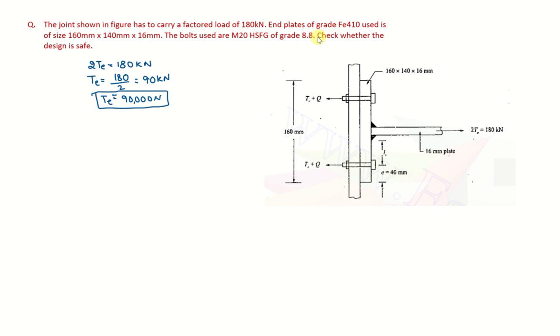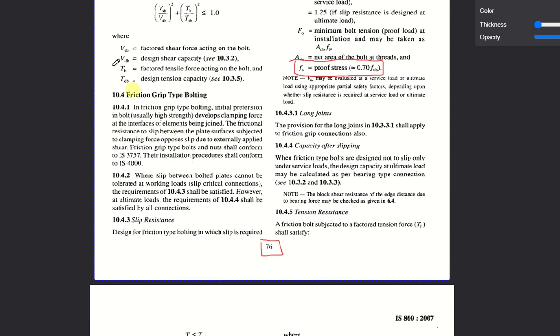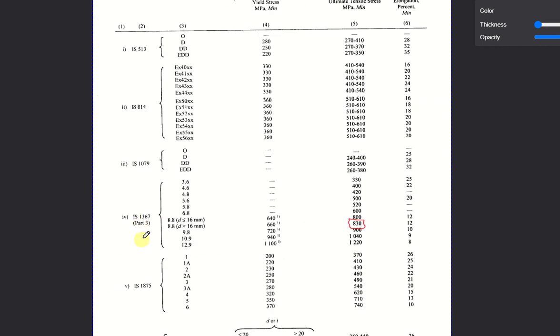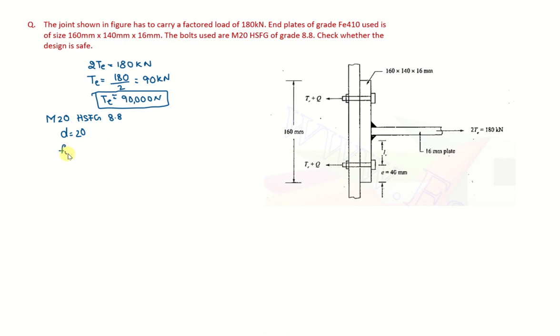And what else is given? The end plates of grade FE 410 are used. And the bolts of grade M20 HSFG. That is high strength friction grip bolts. Grade is 8.8. So diameter is clearly 20 mm. And for grade 8.8, what would be the tensile strength? So let us go to the code book. Page number 13. So see here IS 1367 part 3 for 8.8 grade. Here diameter is more than 16 mm. So ultimate tensile strength would be 830 N per mm squared. So Fub is 830 N per mm squared.